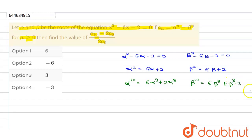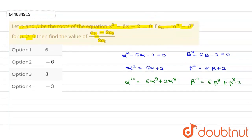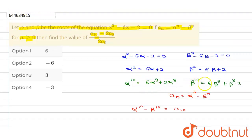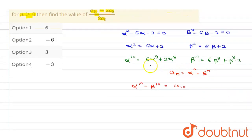We know aₙ equals alpha to the power n minus beta to the power n. So alpha to the power 10 minus beta to the power 10 equals a10. Substituting the expressions for alpha to the power 10 and beta to the power 10, we get: a10 equals 6·alpha to the power 9 plus 2·alpha to the power 8 minus 6·beta to the power 9 minus 2·beta to the power 8.